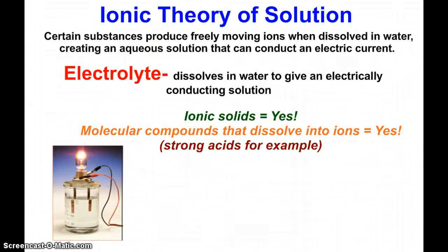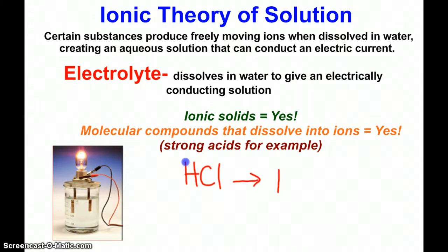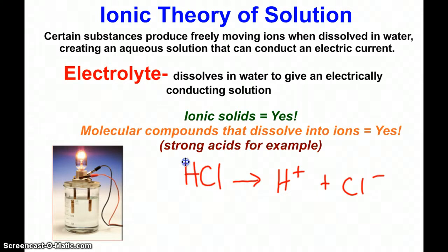Ionic compounds and ionic solids are most definitely electrolytes. As soon as you put them in water and they dissolve, you've got positive cations and negative anions floating around. Some molecular compounds also do that — ones that dissolve into ions — strong acids for example. Hydrochloric acid, when dissolved in water, breaks apart into hydrogen ions and chloride ions. Sulfuric acid is another example. We'll look at some strong acids a little later in this chapter.